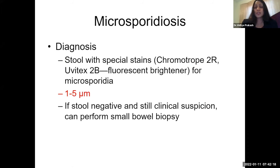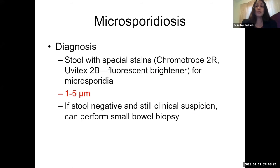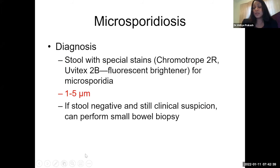Diagnosis requires a special stain — either chromotrope 2R or Uvitex 2B — to detect microsporidia. Remember, the oocyst for cryptosporidiosis was four to six micrometers; microsporidiosis oocysts are much smaller, one to five micrometers. If stool is negative but clinical suspicion remains, perform a small bowel biopsy with special stains to confirm diagnosis.